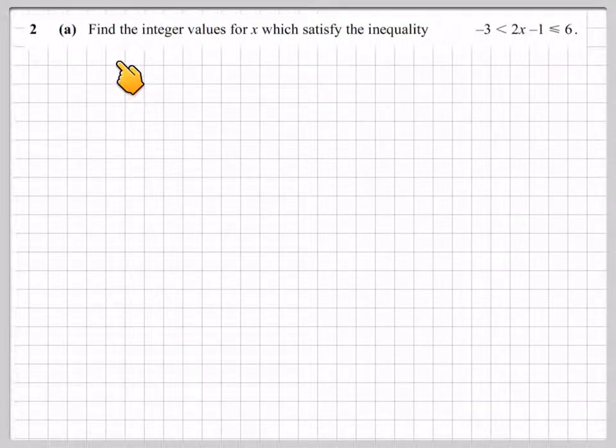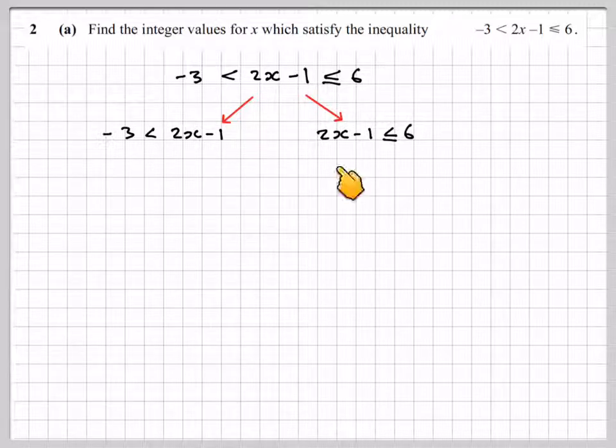This is an algebra paper 4 type, long-standing type question. Find the integer values for x which satisfy the inequality -3 < 2x - 1 ≤ 6. So if we write that down, first of all, what you do when you've got two inequalities like this is you need to solve them separately. So you need to solve -3 < 2x - 1, and then 2x - 1 ≤ 6.